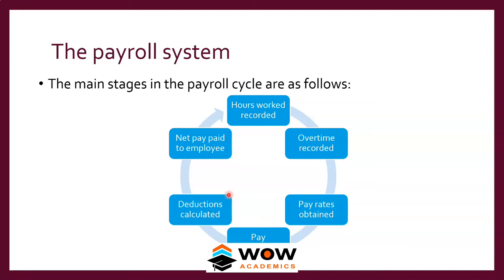HR has its own records of the payment rate, since when HR appoints someone they know the hourly or monthly rate at which they are appointed. Using both the total hours worked plus overtime and the pay rate, the pay is calculated. After pay is calculated, deductions are made for PF, tax, and ESI. After these deductions, the net amount is transferred to the employee. Up to pay calculation HR handles it; after that the information is transferred to the accounts department.